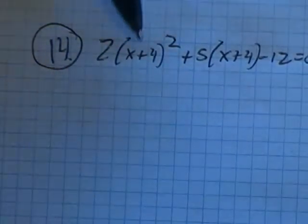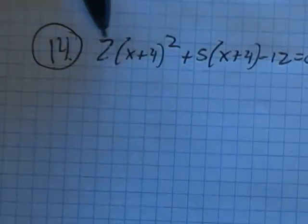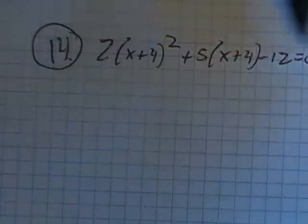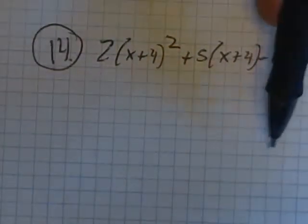So what you could do with this problem is you could square that, distribute in the two, distribute in the five, combine like terms, get a brand new quadratic and solve it.